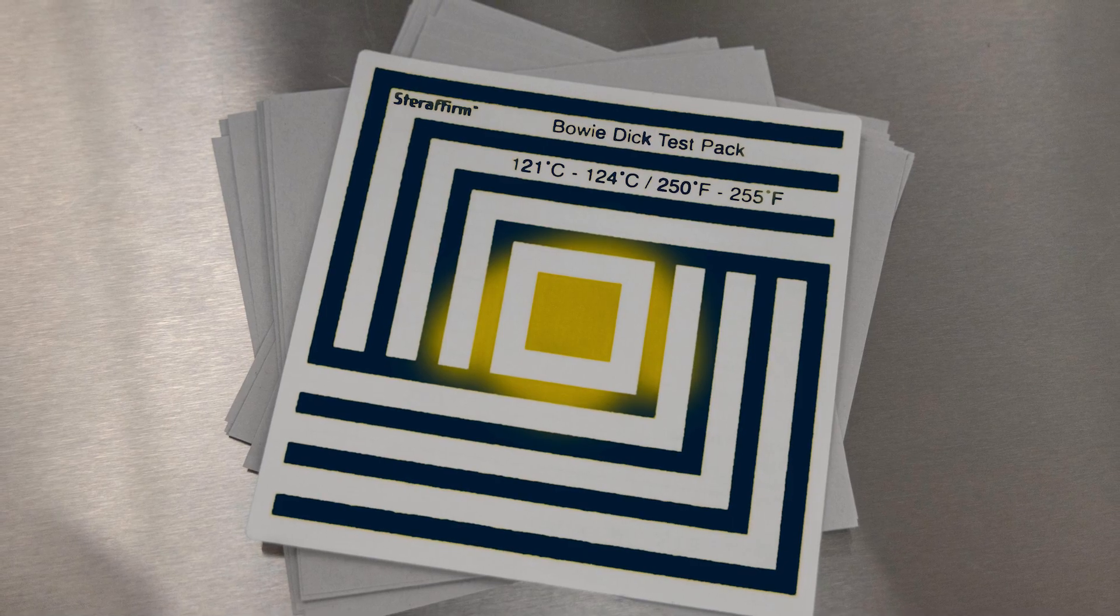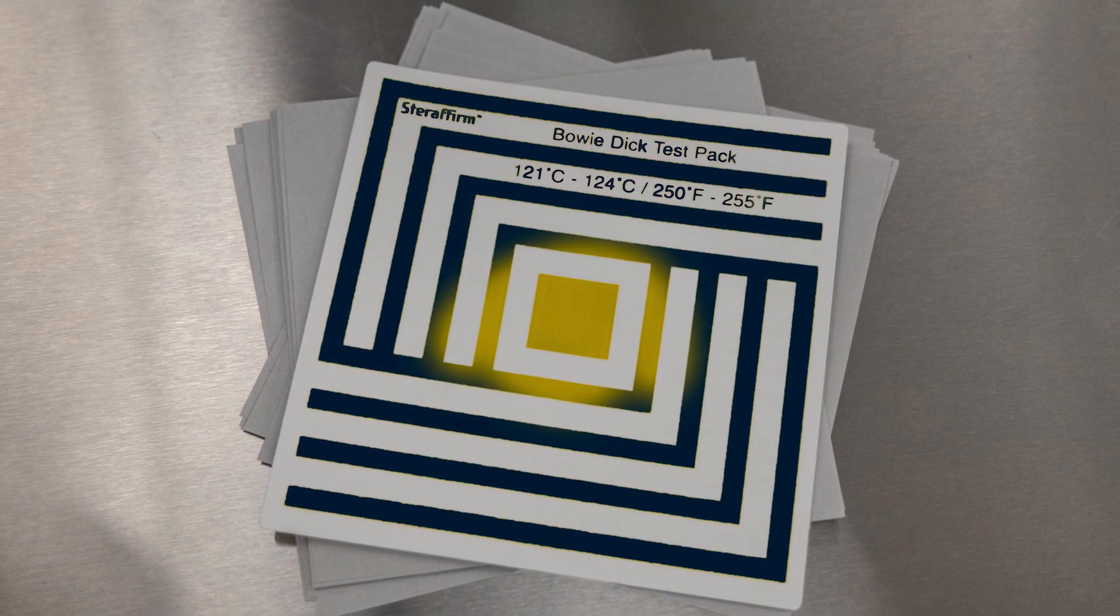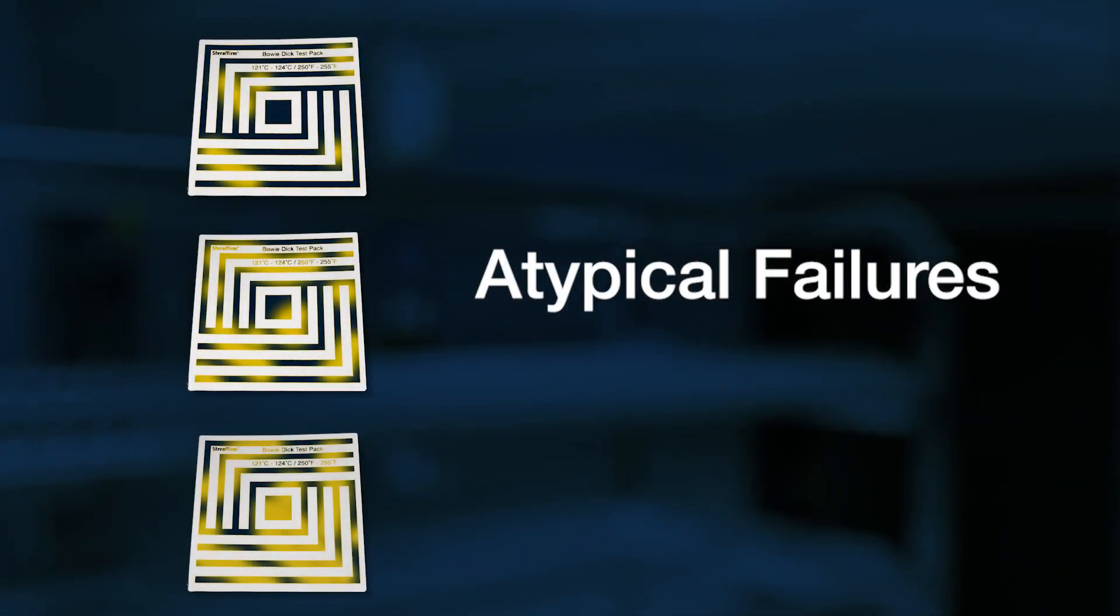A typical failure, such as residual air in the chamber, shows a concentration of yellow towards the center of the carton. Atypical failures may result from steam supply quality